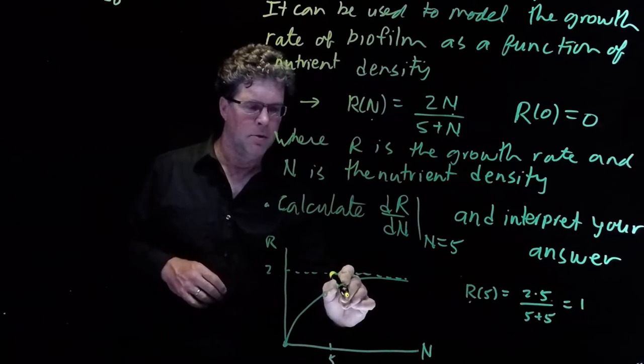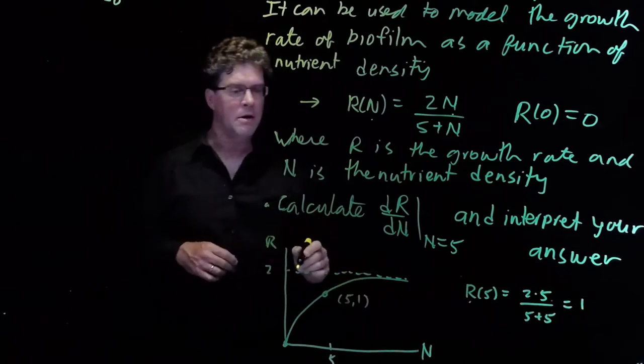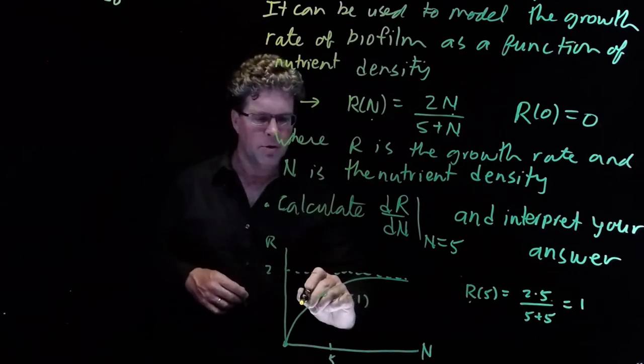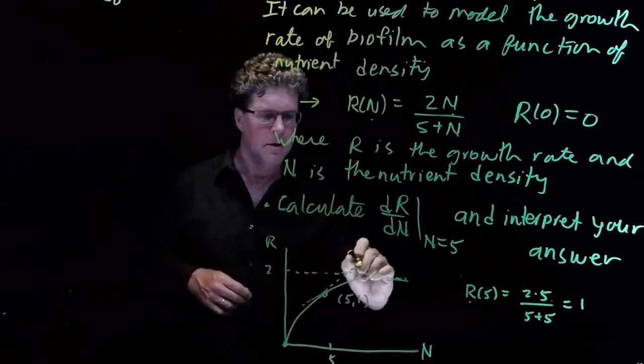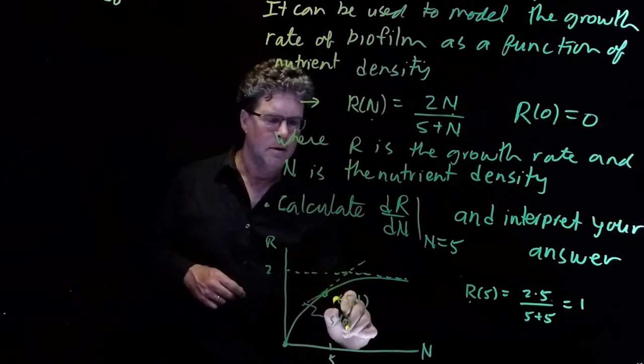And so we have the point 5, 1. And dr/dn will be the slope of the tangent line at that point.